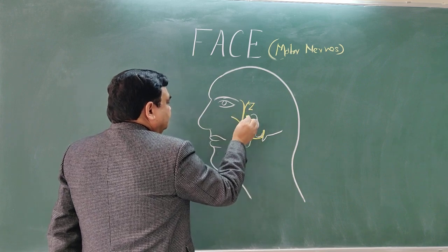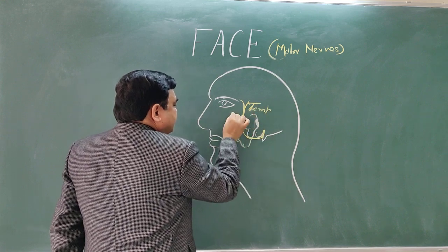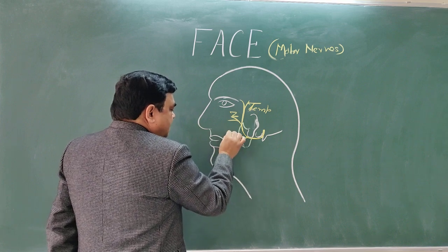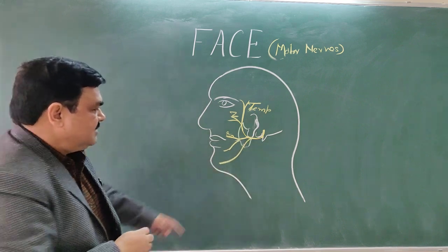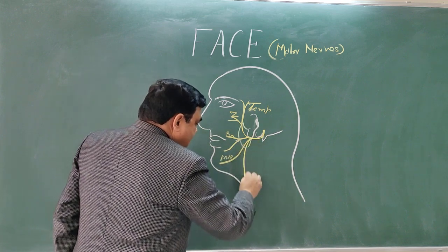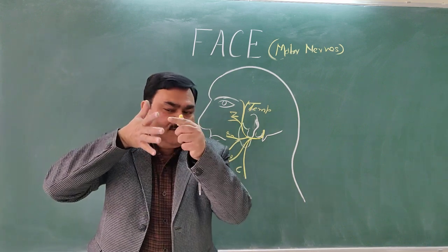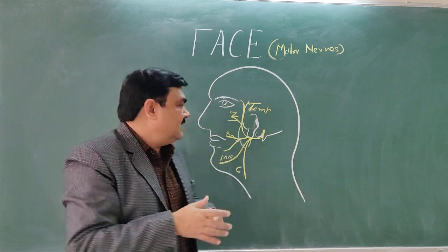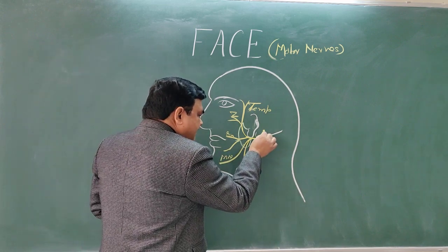The first branch is the temporal branch. Another branch is the zygomatic branch. Here is the buccal branch, which divides into upper and lower buccal. Here is the marginal mandibular branch, and another branch is the cervical branch. So it gives five branches: temporal, zygomatic, buccal, marginal mandibular, and cervical.